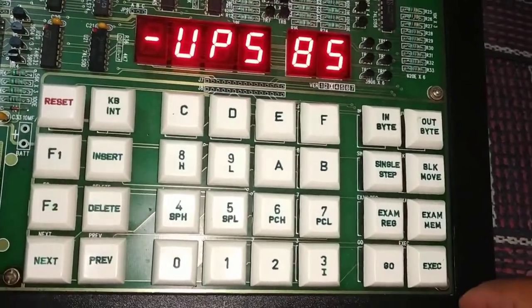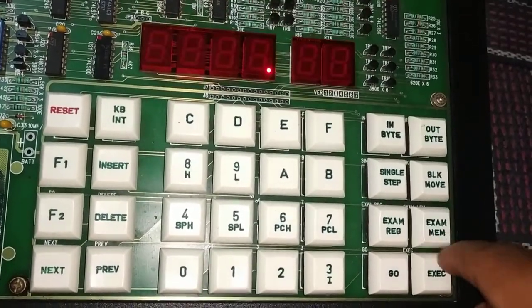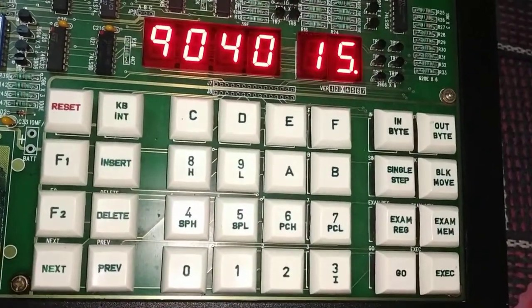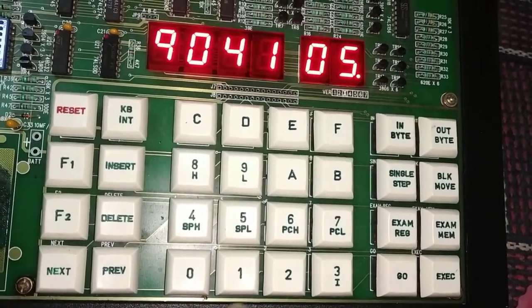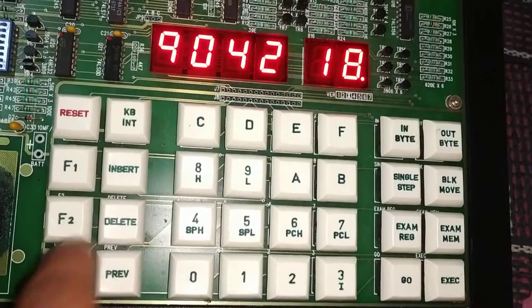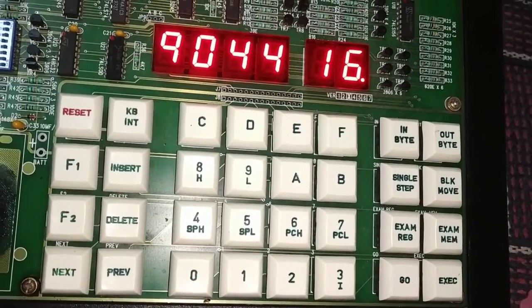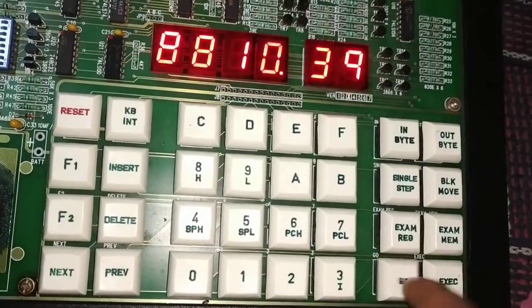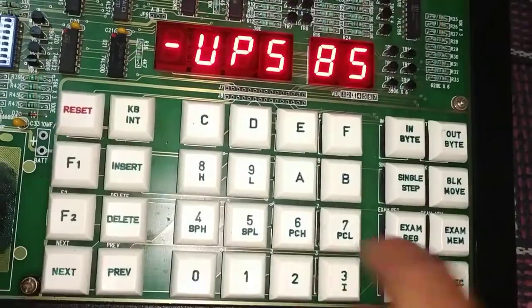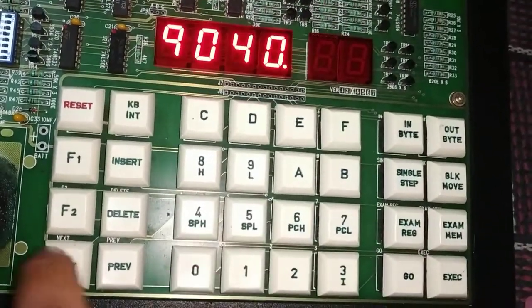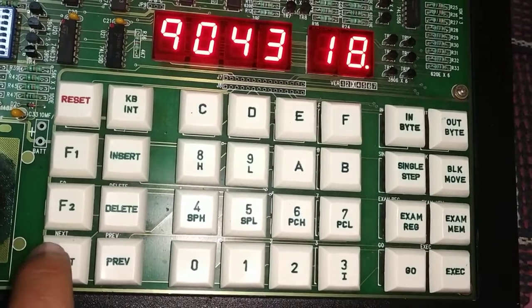We can try another one without any confusion. Exam memory 9040. I am giving 04 as a count, next, next, 19, 18, 00, 02. Execute, go 9000, execute. As I said, exam memory 9040, first count 00, 02, 18, 19.